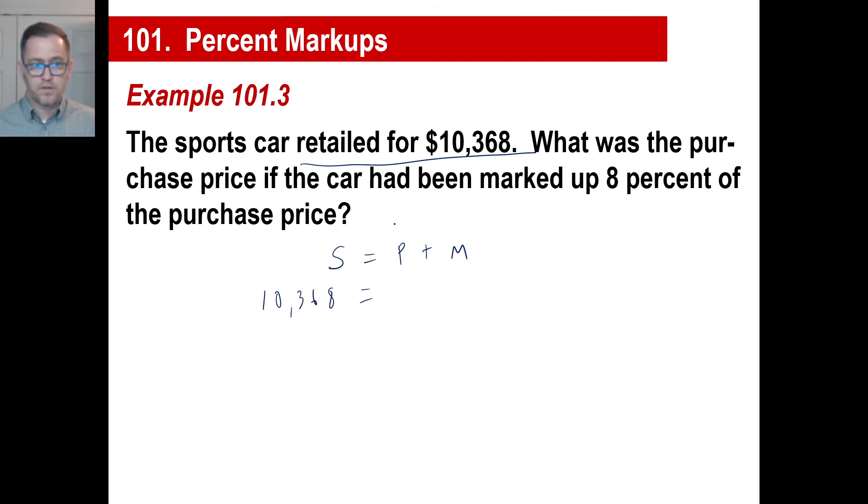What was the purchase price? We don't know. The car was marked up 8% of the purchase price, which means this is going to be 0.08, not 0.8. So this will be 1P plus 0.08P. So 1.08P equals 10,368. Do the arithmetic or pop it in the calculator, and you'll find that the purchase price was $9,600. That's percent markups.